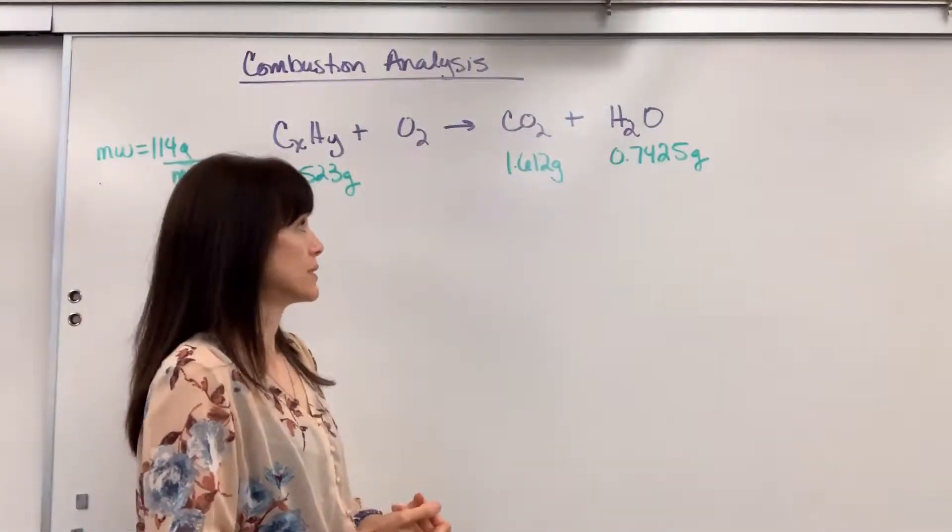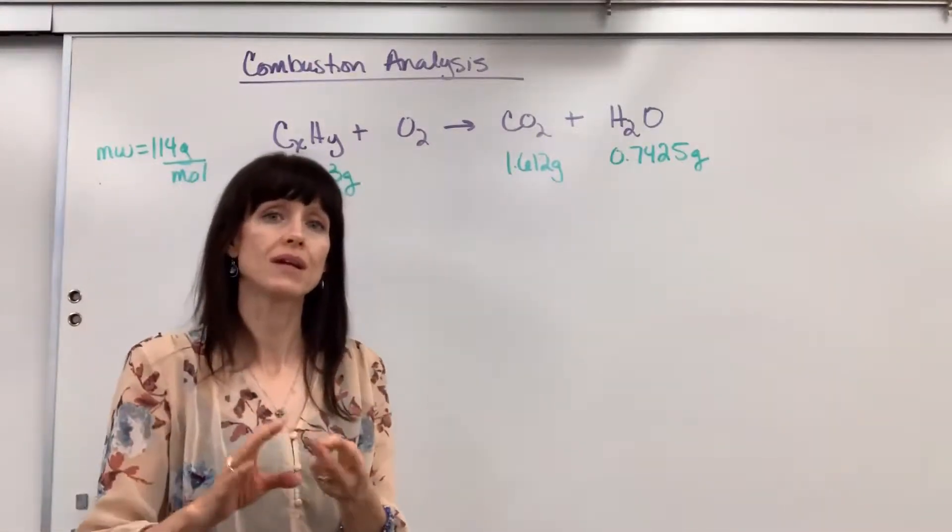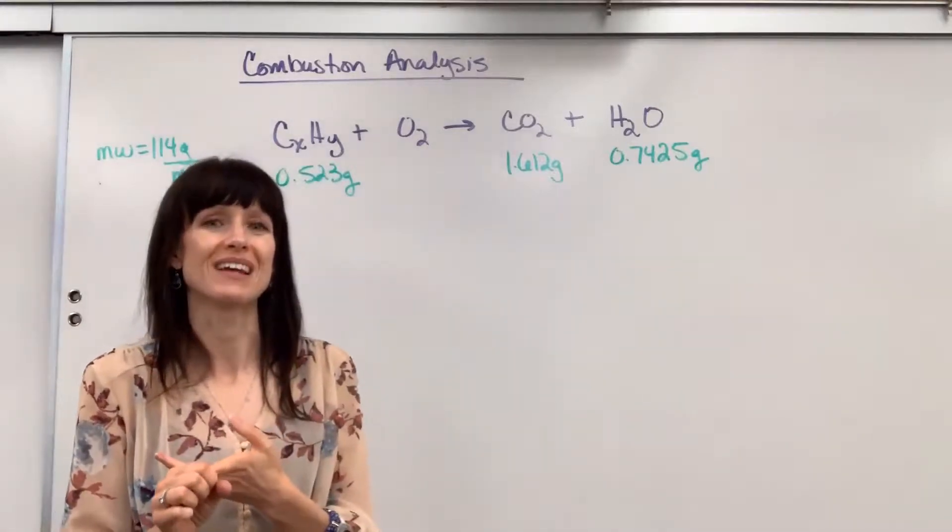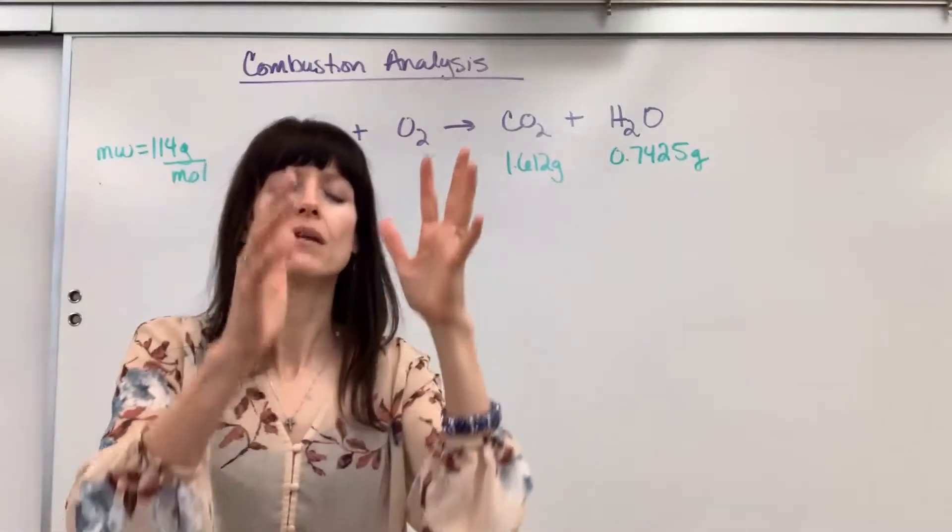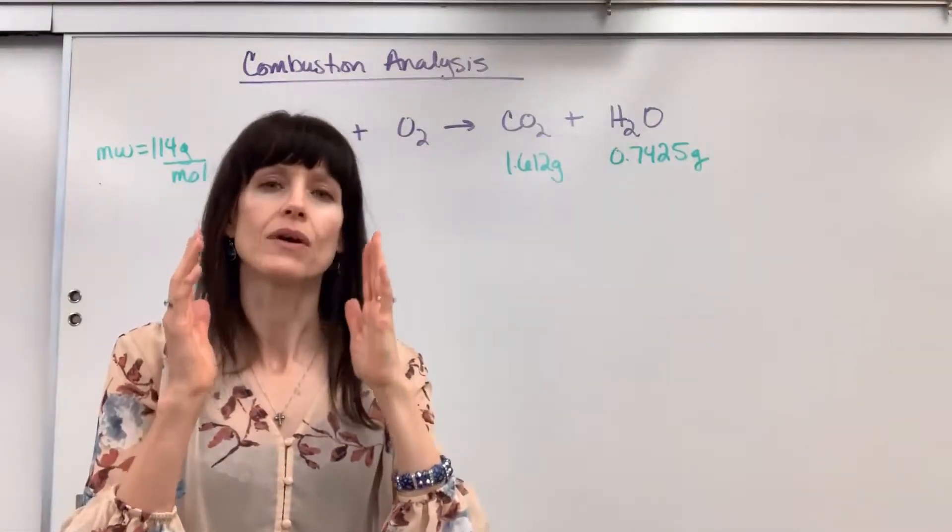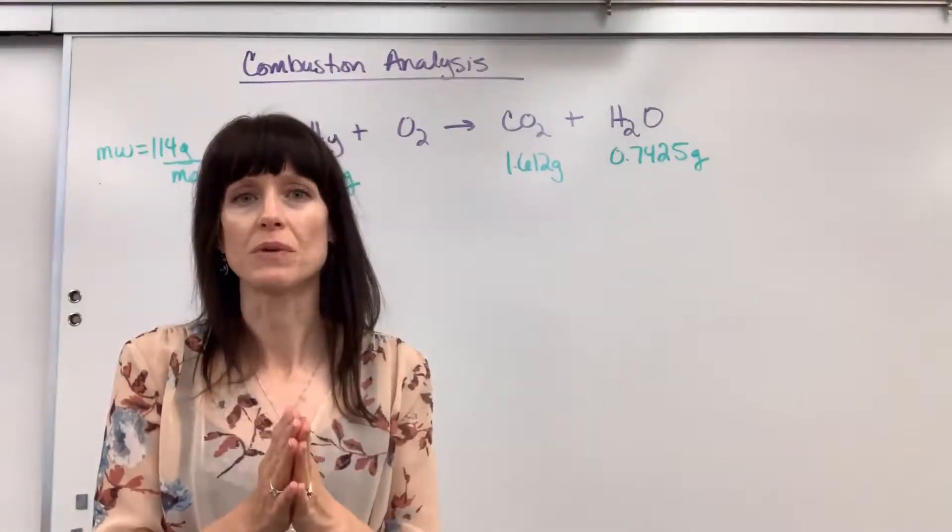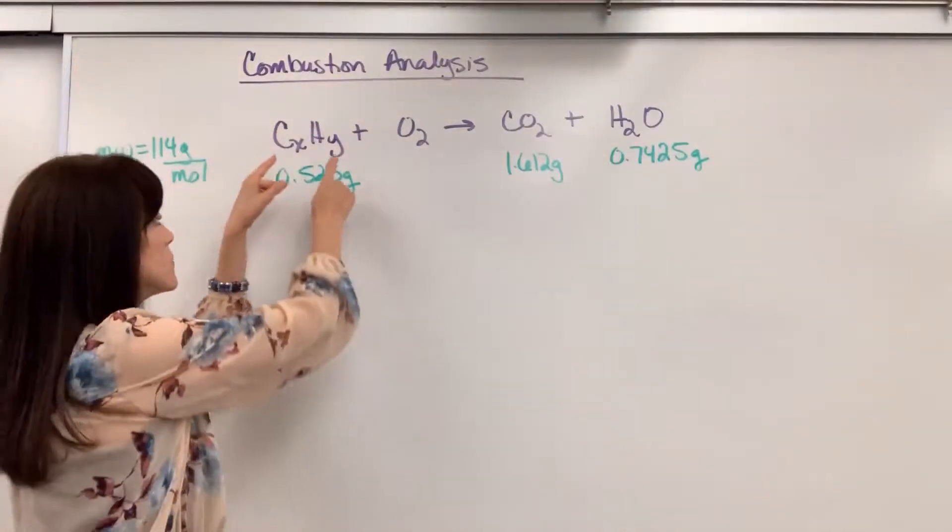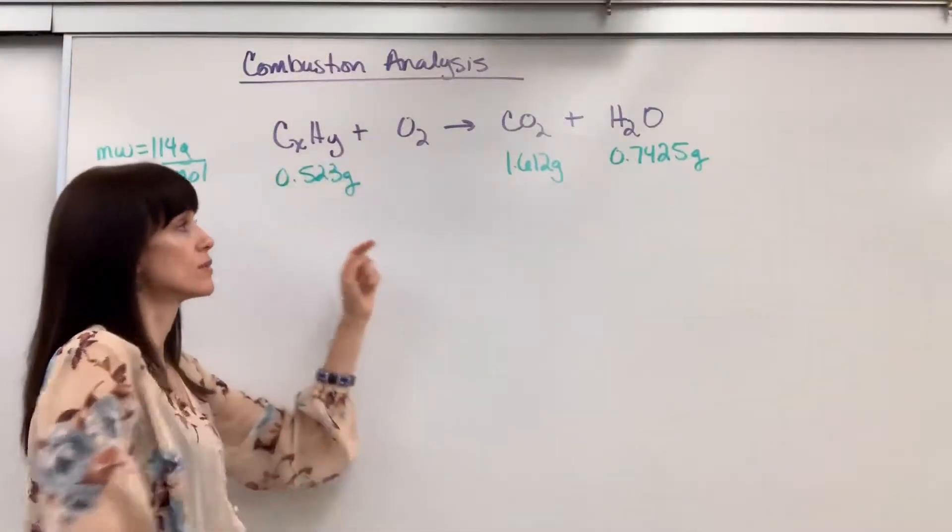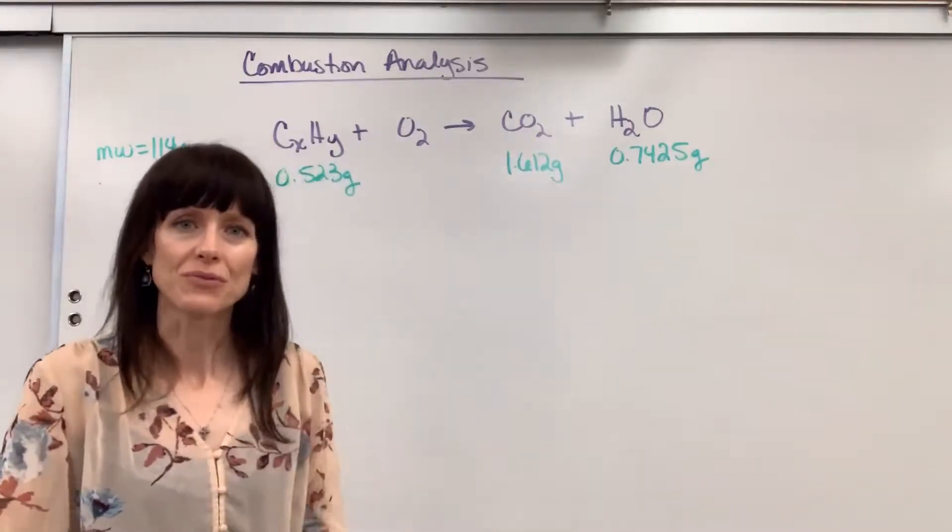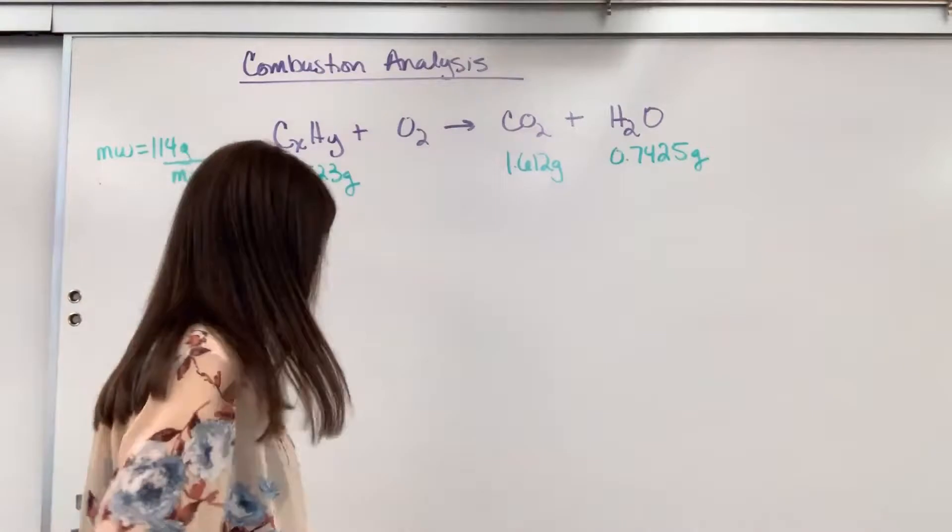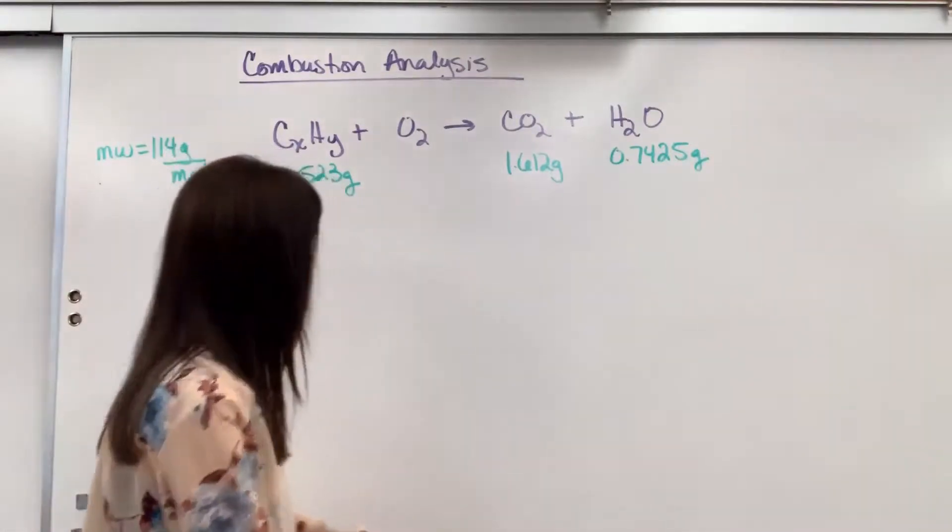We are going to determine the amount of carbon and hydrogen. And here's the really cool thing. If we know the amount of carbon and hydrogen, we're going to go back to empirical formula. Remember, these are just molar ratios. So if I can find the moles of carbon and hydrogen, then we can find the empirical formula. Let me show you how we're going to do this.